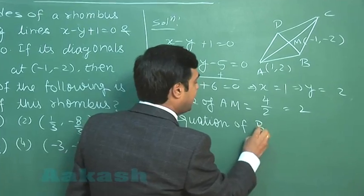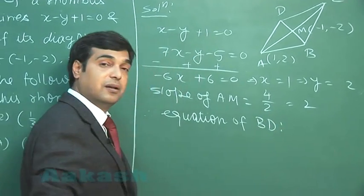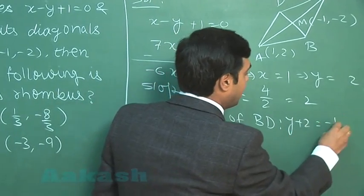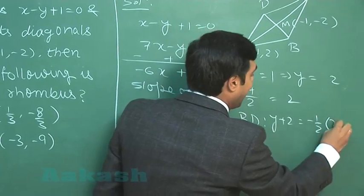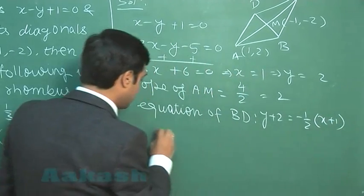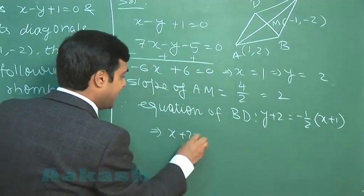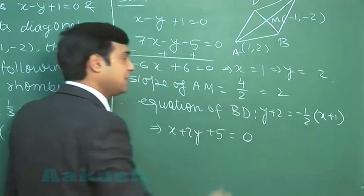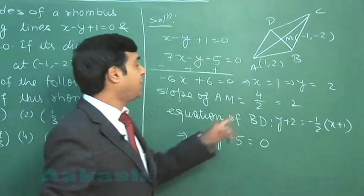The other diagonal we can write it as y plus 2 equals minus half times (x plus 1). That is, on simplifying, it is x plus 2y plus 5 equals 0.